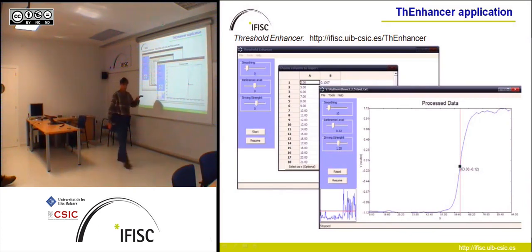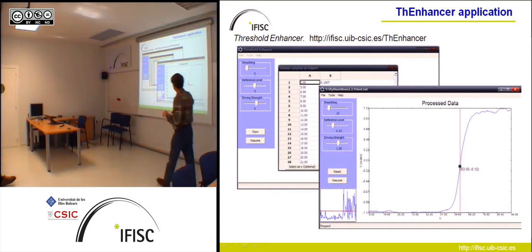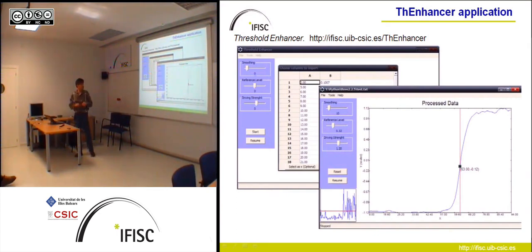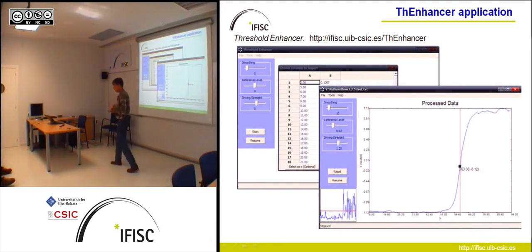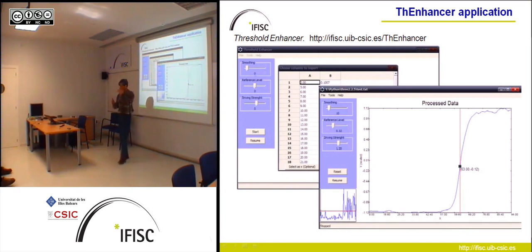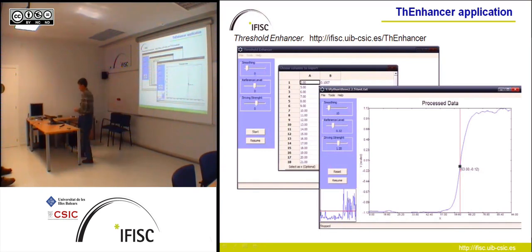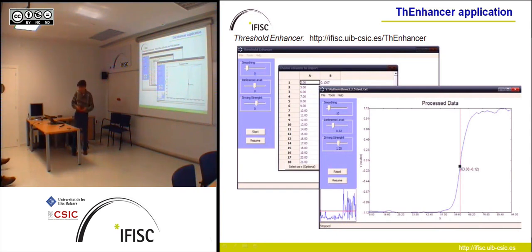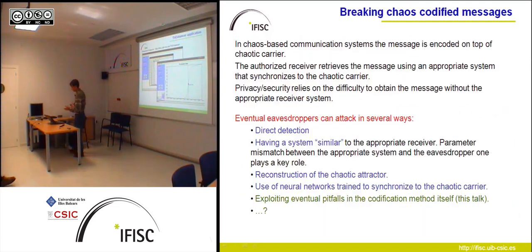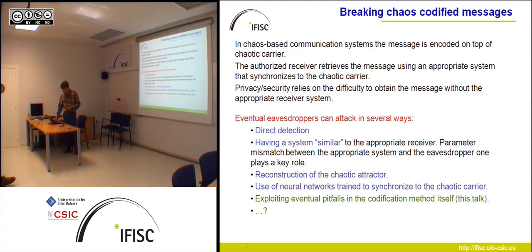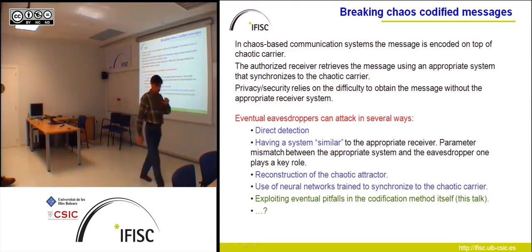There is an application ready to be downloaded from our web page. You can upload data from a spreadsheet, and it runs the Ginzburg-Landau filtering — showing the evolution in computational time as the data is filtered. When it reaches a stationary state, it tells you where there is a jump or not in the data sequence. It is implemented in Python and available for Windows and Mac.